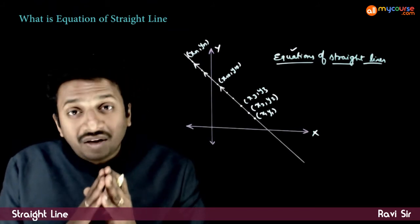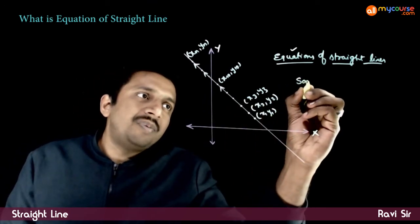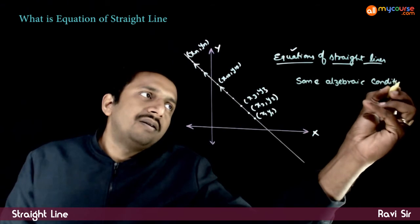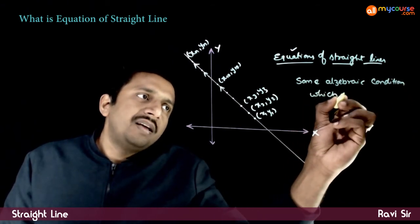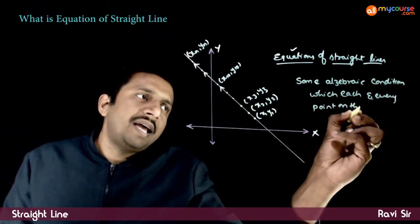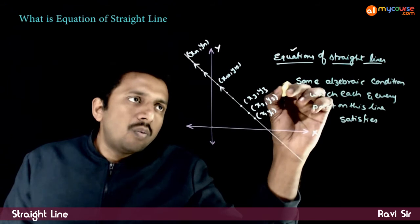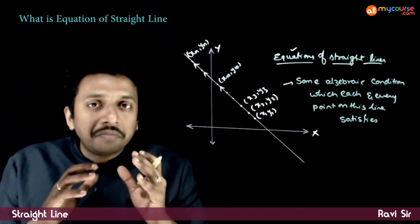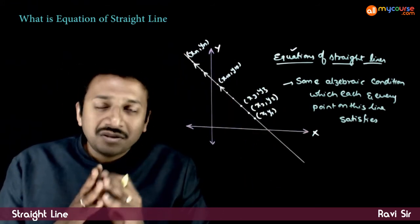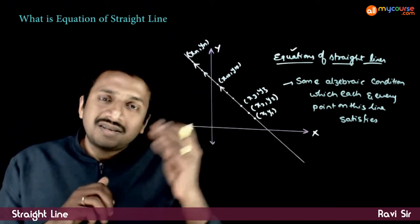When I talk about the equation of a straight line, I am asking: is there some algebraic condition which each and every point on this line satisfies? If there is some algebraic condition which every point on this straight line satisfies, then that condition will be called the equation of this straight line.